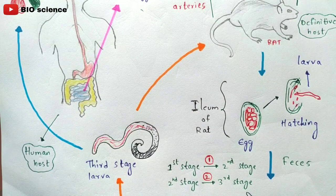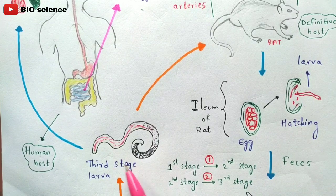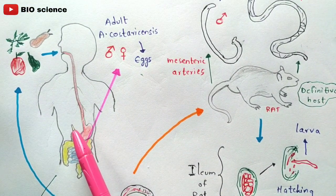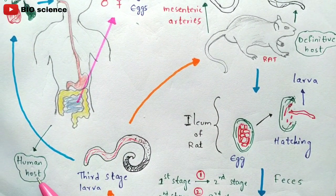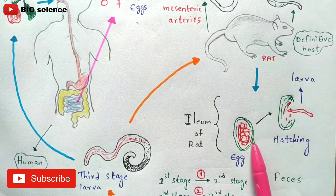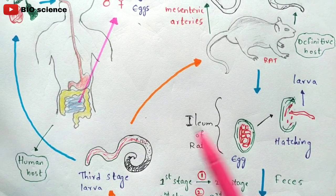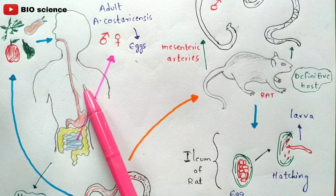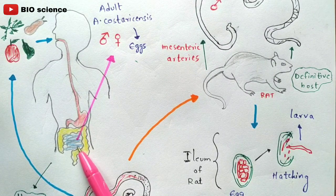If rats consume these gastropods containing third stage larvae, the rat gets re-infected. There is also another route: if the third stage larvae present in snails are consumed by human beings — either through contaminated food and water or by directly consuming snails — then human beings also become infected. The third host is the human host, completing three hosts total. Once inside the human body, the worms enter the intestine and cause damage, resulting in intestinal angiostrongyliasis.